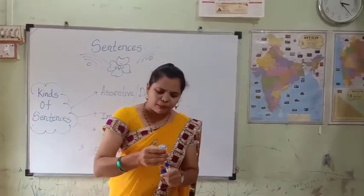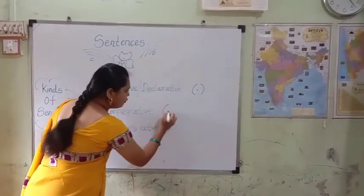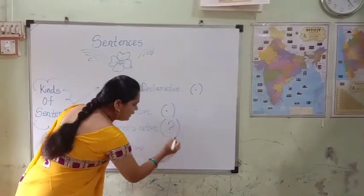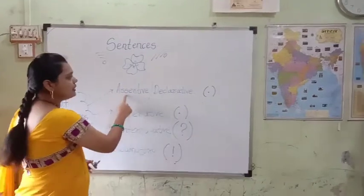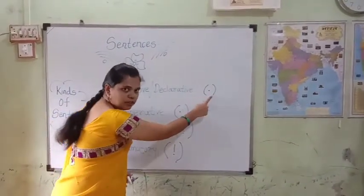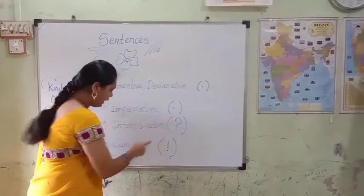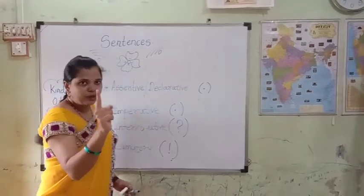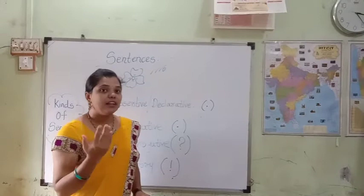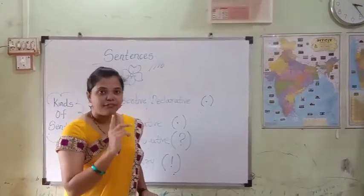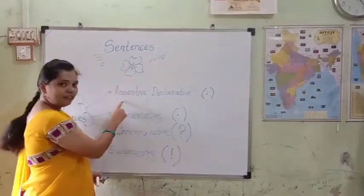So, assertive or declarative sentence ends with a full stop. Imperative sentences are ended with a full stop. Interrogative sentence ends with a question mark. An exclamatory sentence ends with an exclamation mark. Did you understand what I want to share with you? Today we have learned the lesson on sentences — features of sentences, what is the difference between sentence and phrase, along with the kinds of sentences. We have learned four kinds of sentences.